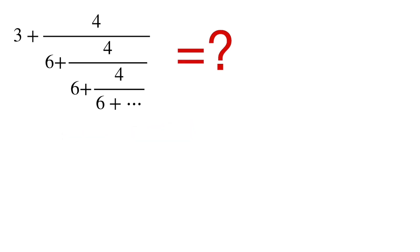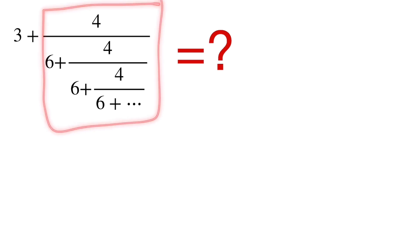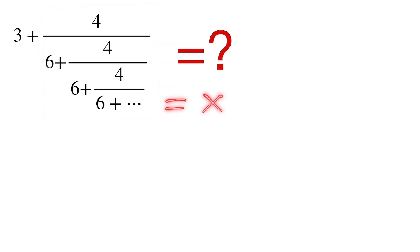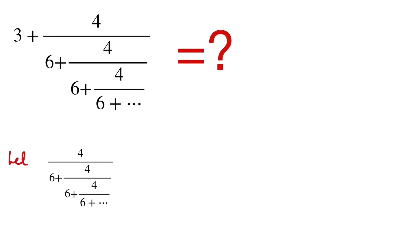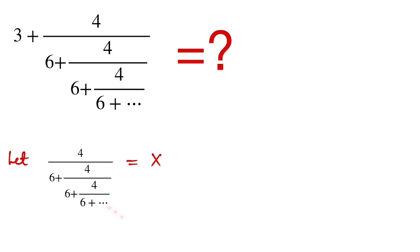If we find the value of the repeating part, we can just add the 3 and get the final answer. So let's focus on that inner continued fraction and call it some number x. As you can see, this pattern is self-similar — it continues infinitely many times, so the sub-expression has the same structure as x itself.